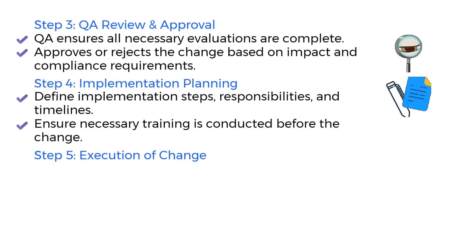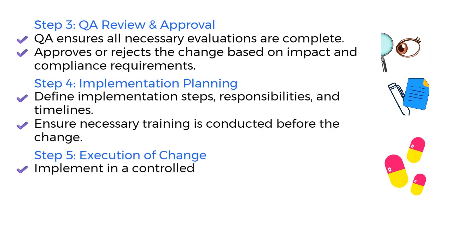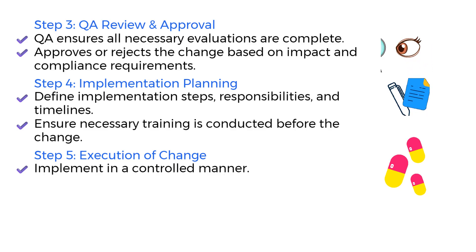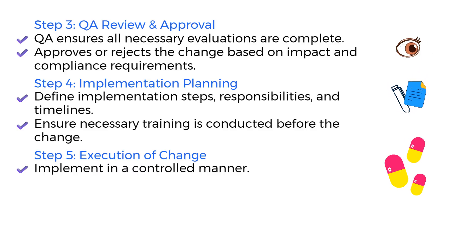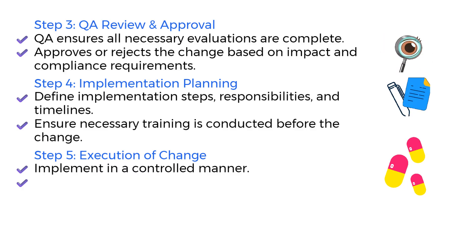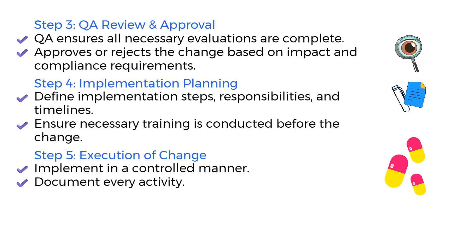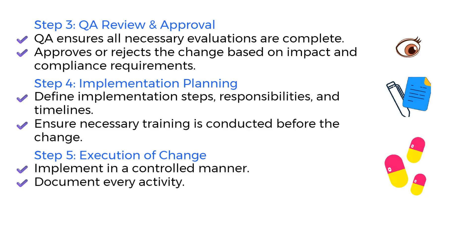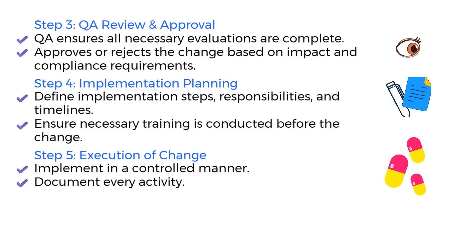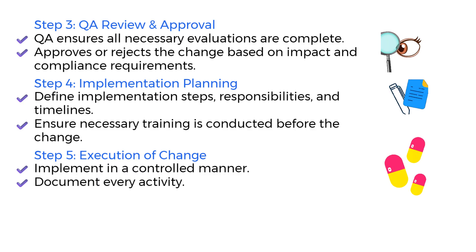Step 5: Execution of Change. This is where the change is actually implemented, but always in a controlled and documented manner. Execution must follow the approved plan exactly — every action must be logged, initialed, and traceable. This step may also involve coordination with validation, IT, or maintenance, depending on the nature of the change.